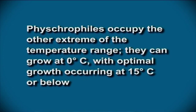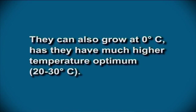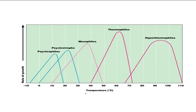Psychrophiles occupy the other extreme of the temperature range; they can grow at 0°C with optimal growth occurring at 15°C or below. Examples include Erythrobacter species, Psychrobacter species, Halomonas species, Hyphomicrobium species, Sphingomonas species, Aureobasidium pullulans, Phoma species, and Chrysosporium. Psychrotrophs can also grow at 0°C but have a much higher temperature optimum between 20 to 30°C. Figure 7 shows the classification of microorganisms on the basis of preferred growth temperature.